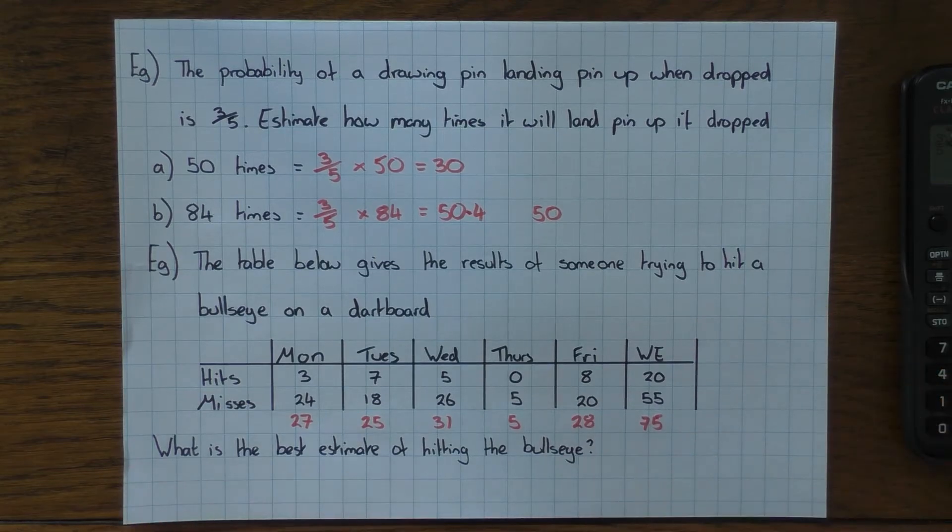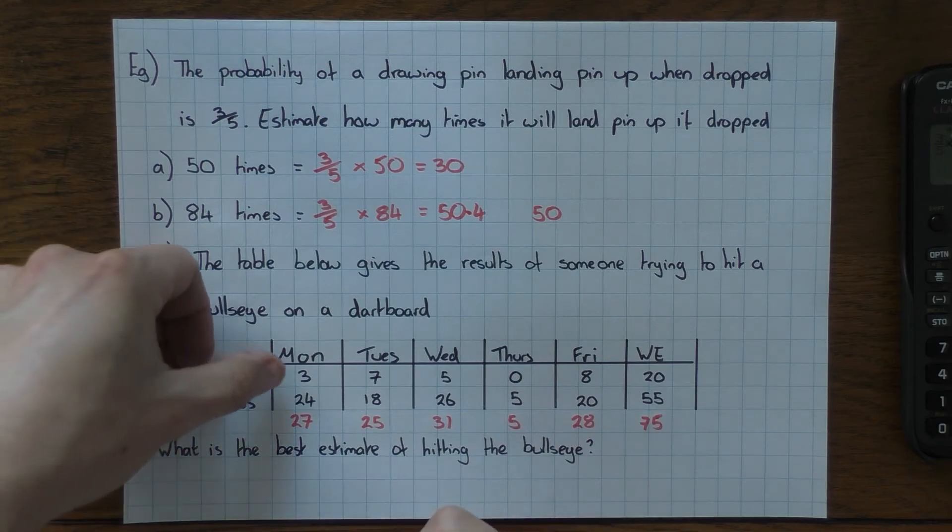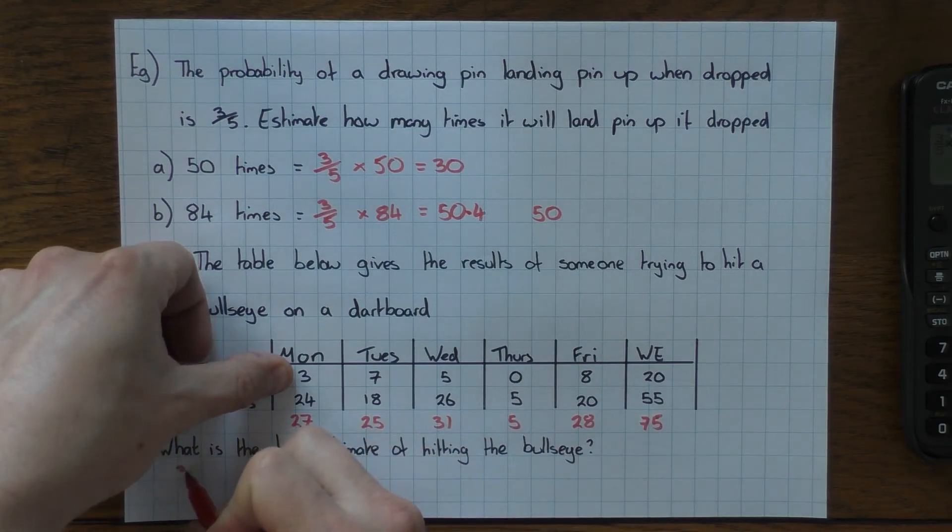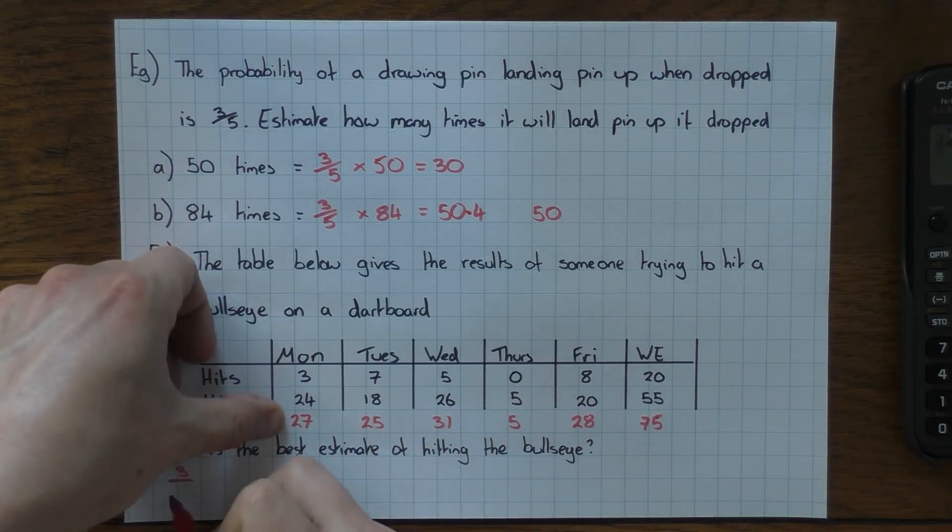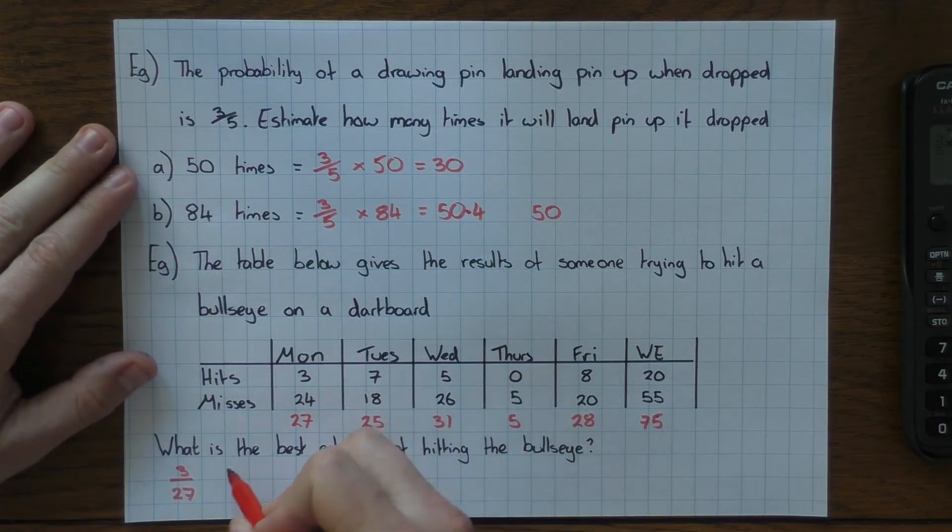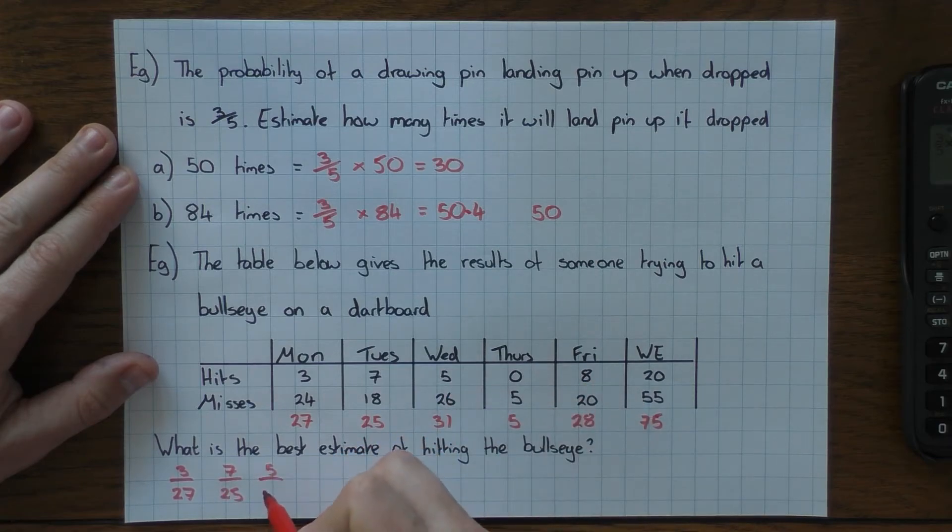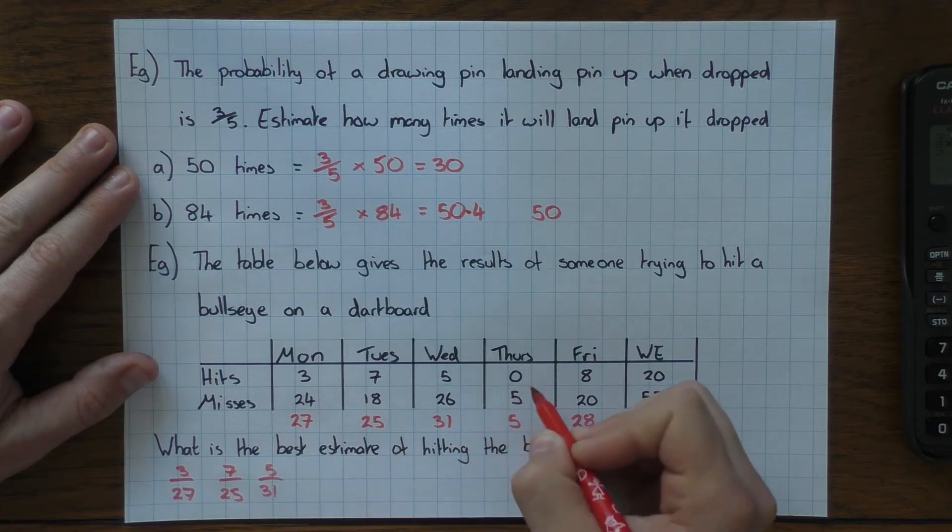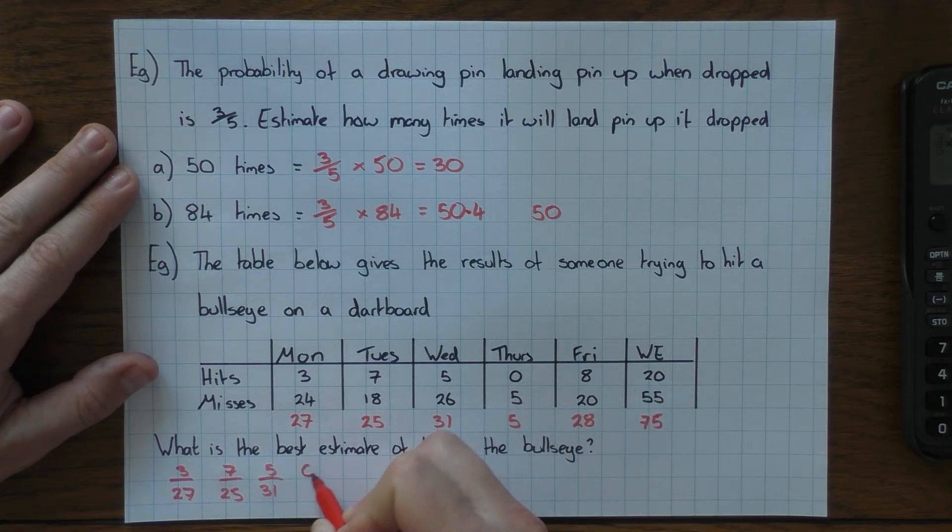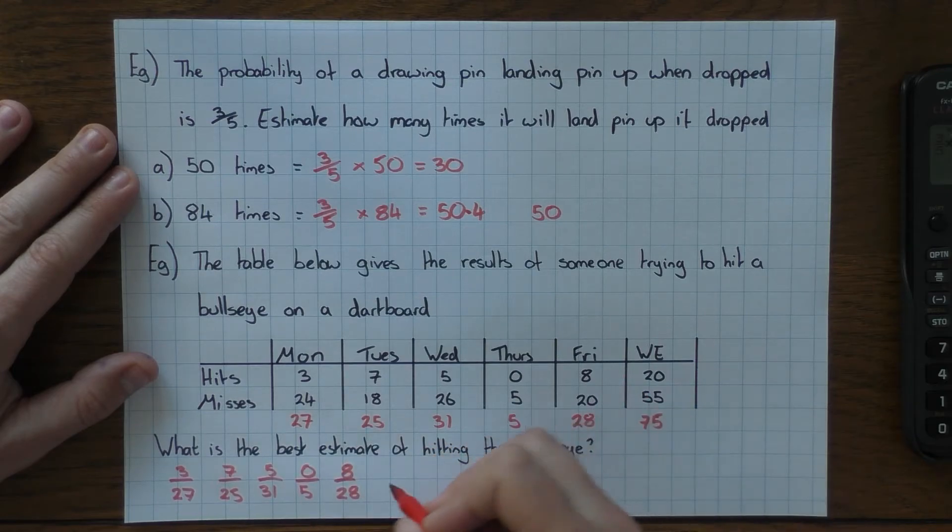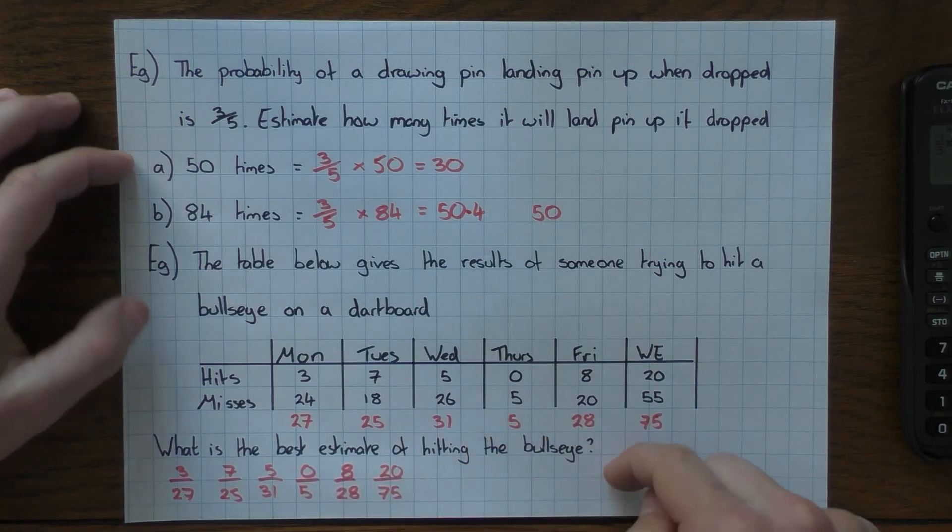So what is the best estimate of hitting the bullseye? Well, let's have a look at what we've got. We have for Monday 3 over 27. For Tuesday we have 7 over 25. Wednesday we have 5 over 31. 0 over 5 for Thursday. 8 over 28 for Friday. And then on the weekend we have 20 hits out of 75.